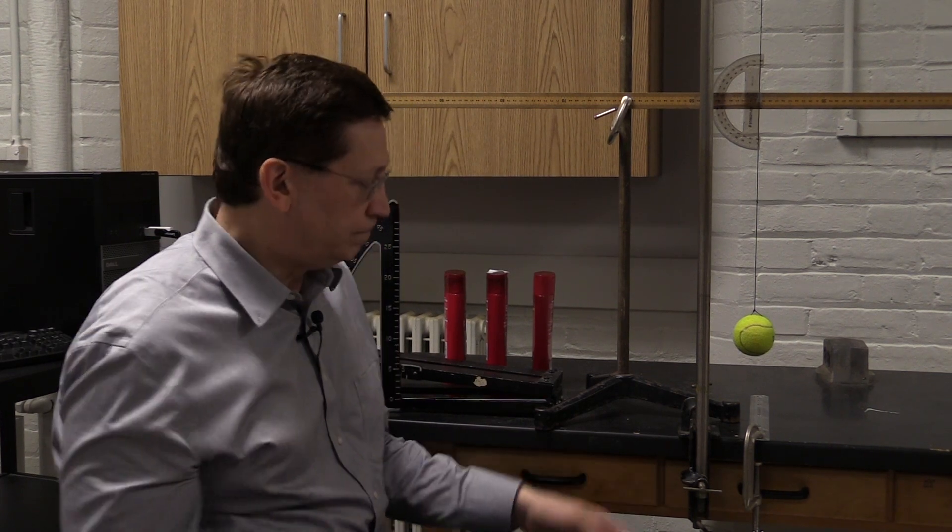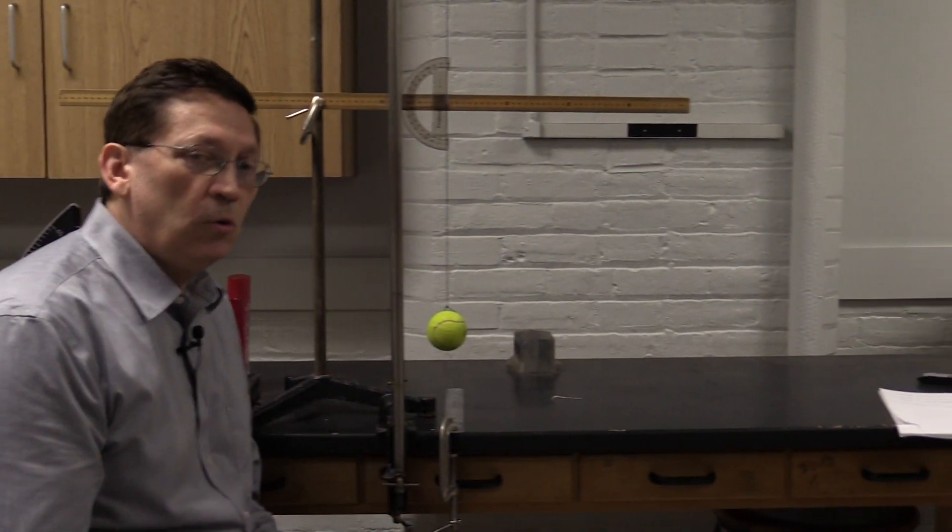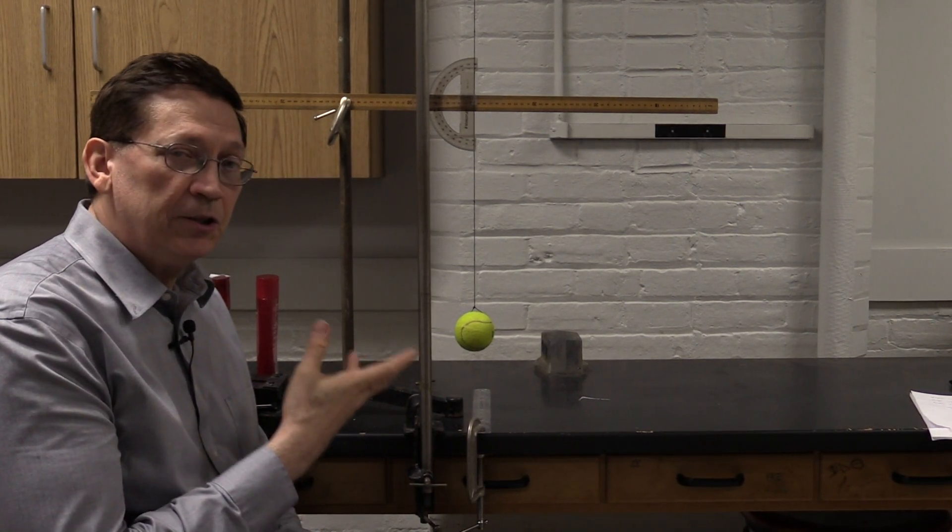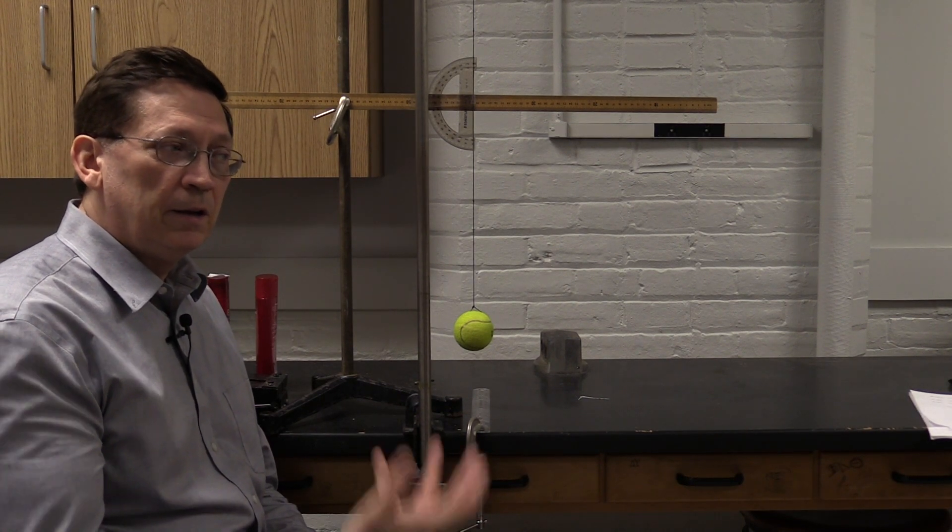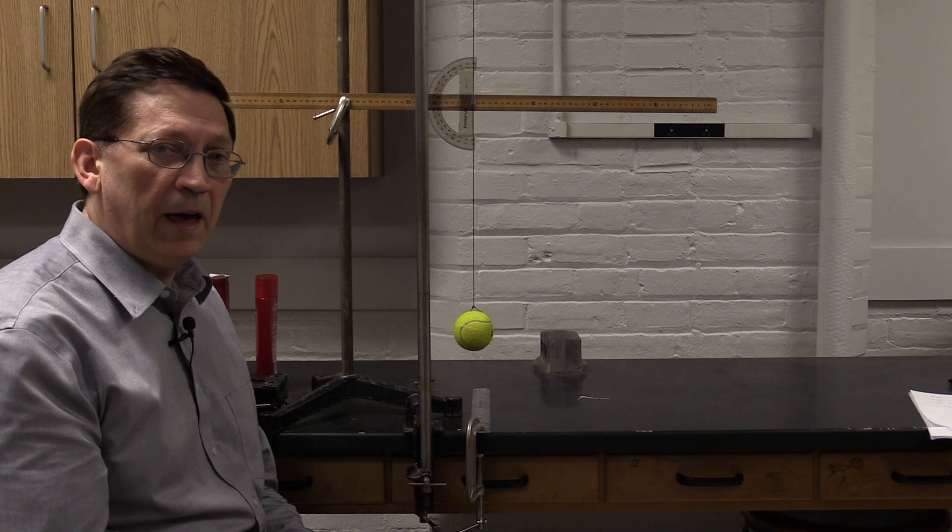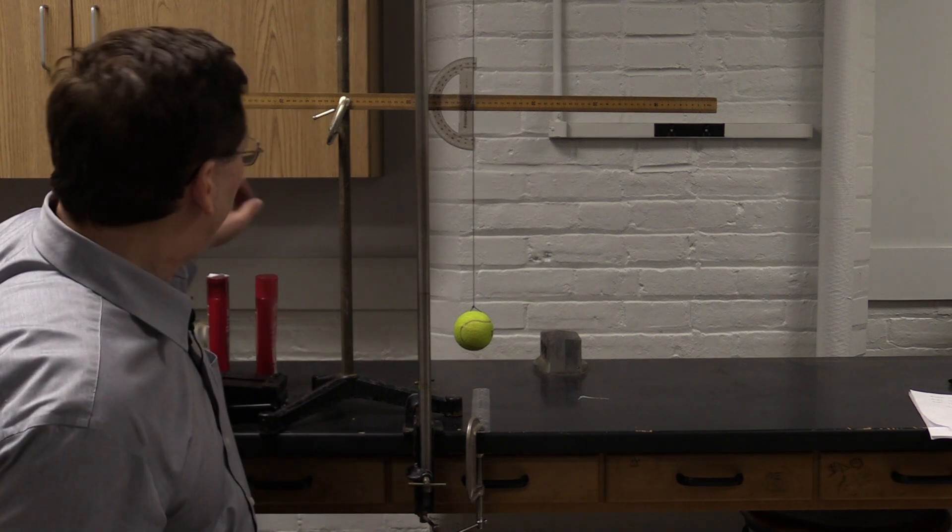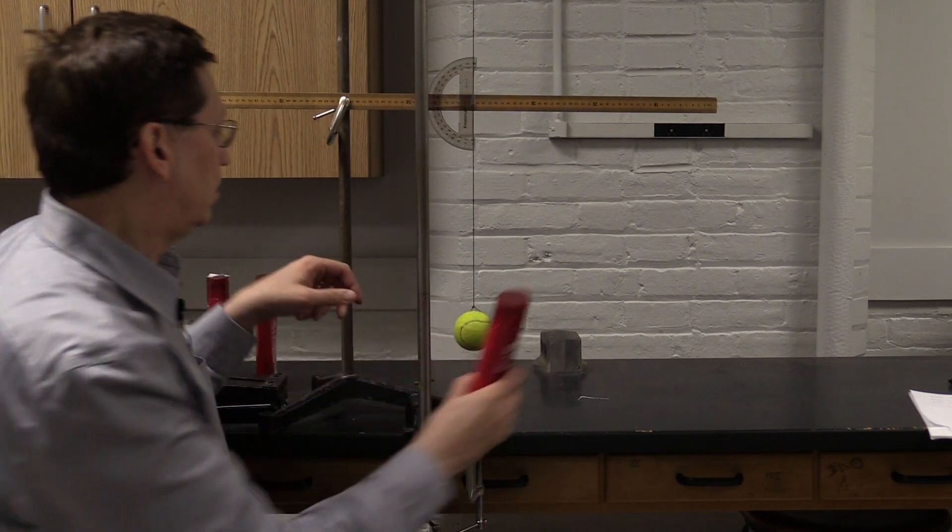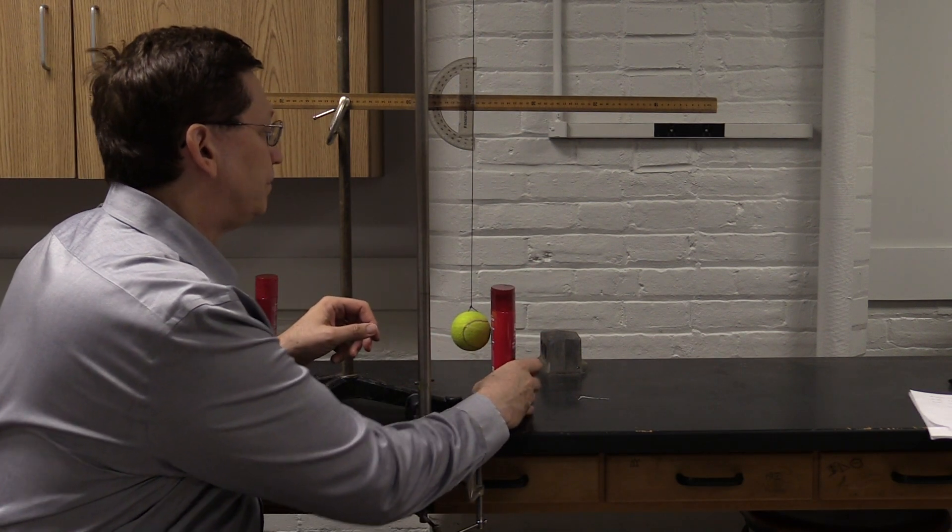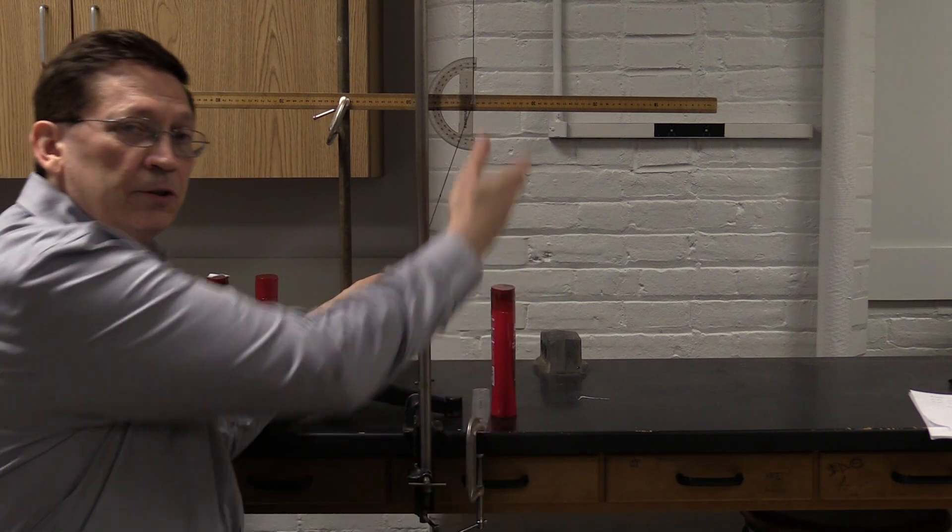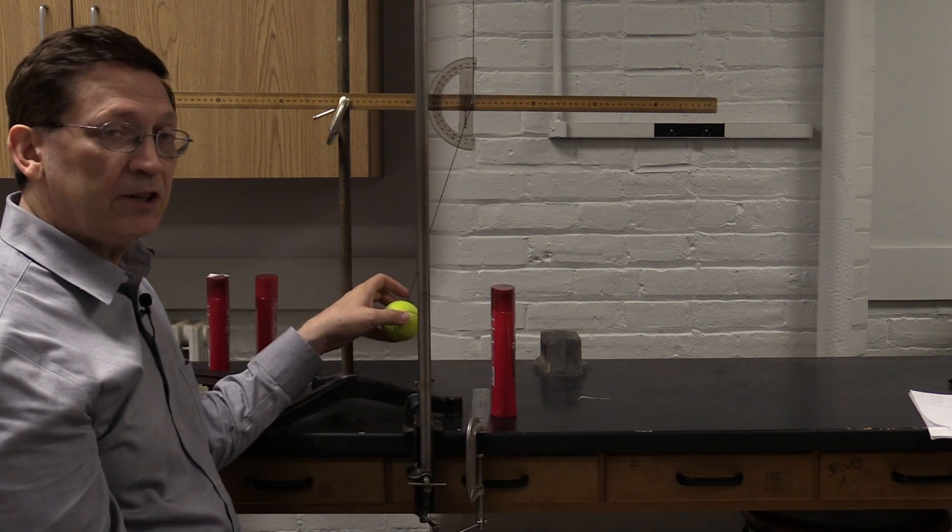But there's another factor that comes into play. Alan Yuan developed this demonstration to show the effect of impact, and it's even more extreme than just looking at stability angle. So what we have here is a tennis ball mounted on a string that I can draw back to different angles. You put a protractor here to measure that launch angle.